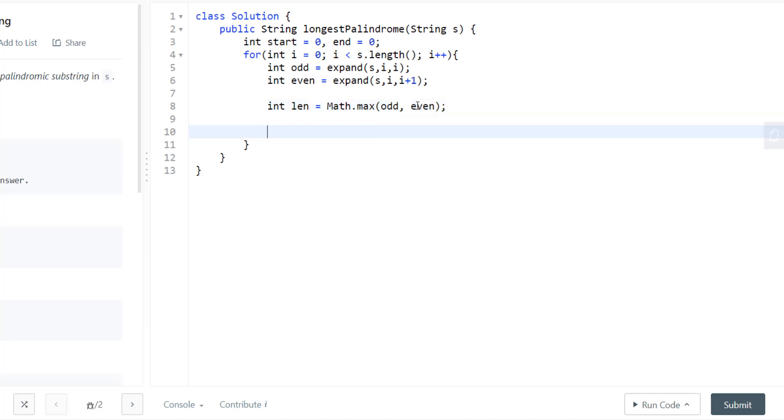After we find this, we also need to update our start and end index if this length is actually greater than the length we have earlier found out. So here, if this length is greater than the previous length, which we can find out by end minus start, I'll have to find the new start and end.